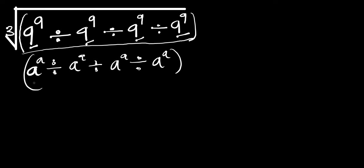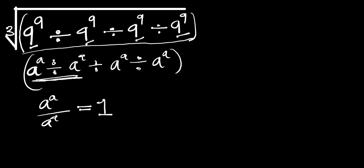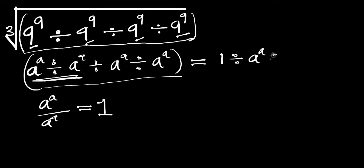What you have to do is concentrate on the first two terms. We have a to the power of a divided by a to the power of a, and this equals 1. So if this equals 1, that means the whole expression becomes 1 divided by a to the power of a, divided by a to the power of a. So we have inserted 1 here. Now this is the same trick that we are going to use right here.